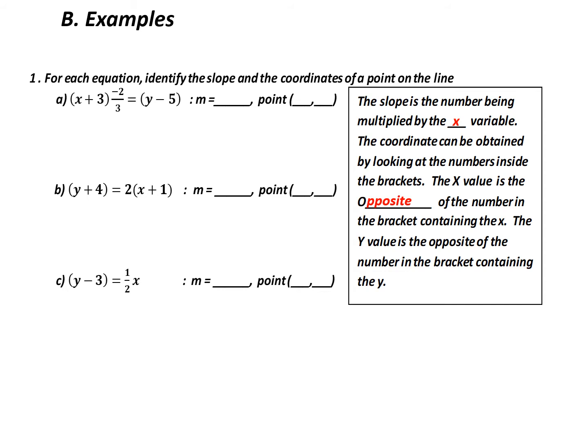Let's start with part a. We write out our base form of the equation, with m and the x values on the left-hand side to match the given equation. What matches up with m is negative 2 over 3 — therefore my slope is negative 2 over 3. Now I need to find a coordinate. Looking at the x values, I recognize I am subtracting a value, and to get positive 3, it would have to be negative 3. Therefore my x value is negative 3.